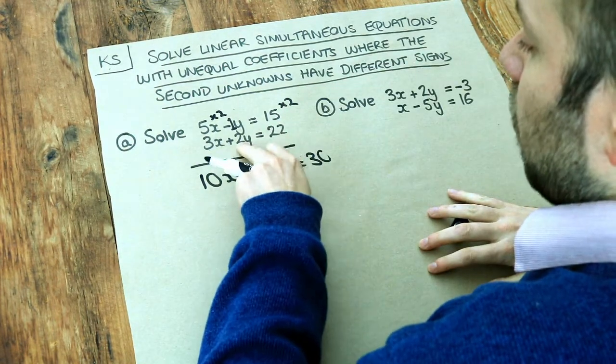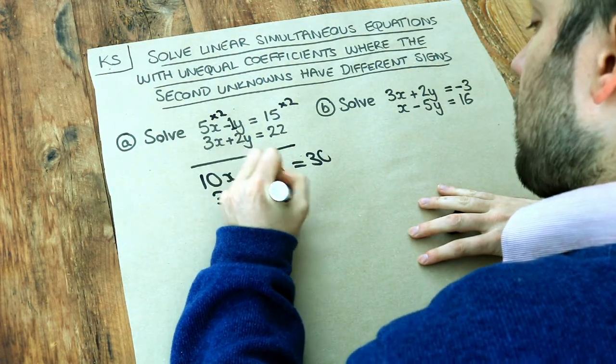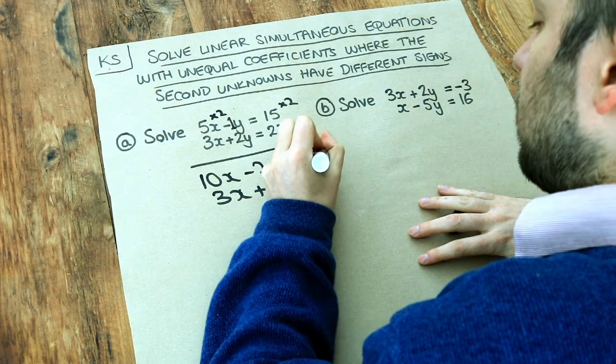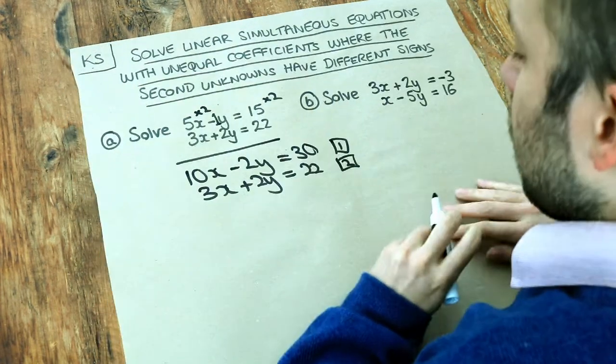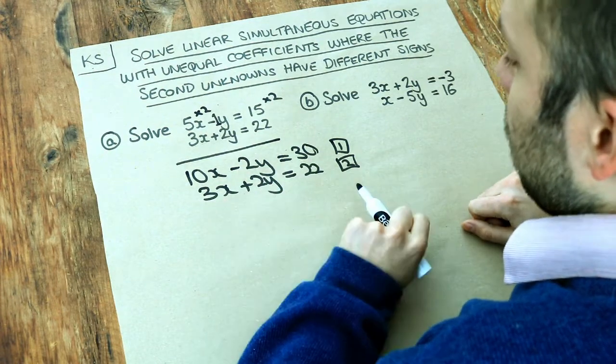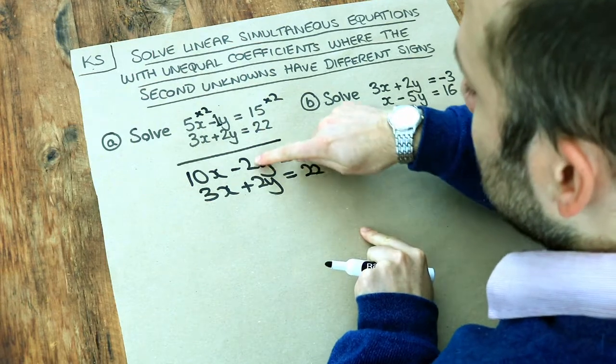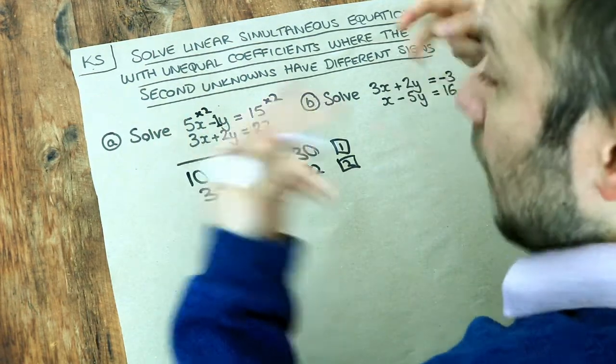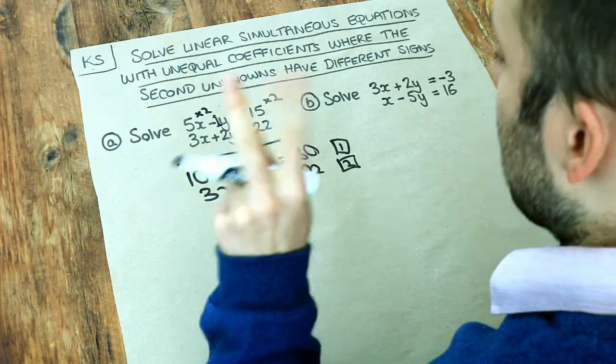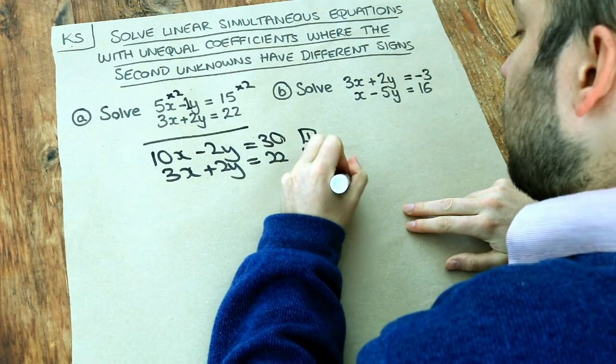And then the second equation, I've already got that as 2 so I'm just going to copy it out for convenience. Now let's think what we need to do to these two equations. So we call this equation 1, this equation 2. In the previous video we subtracted the two equations, but this time can you see we need to add the two? Because if you add minus 2y and plus 2y, that comes to 0y. They cancel, which is what we want because we want to eliminate one of the variables, in this case the y. So let's do that, let's add the two equations.